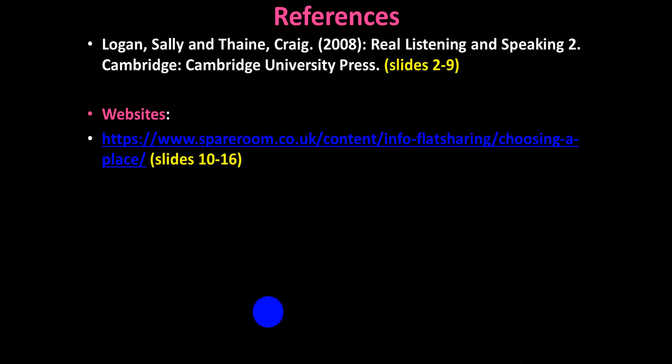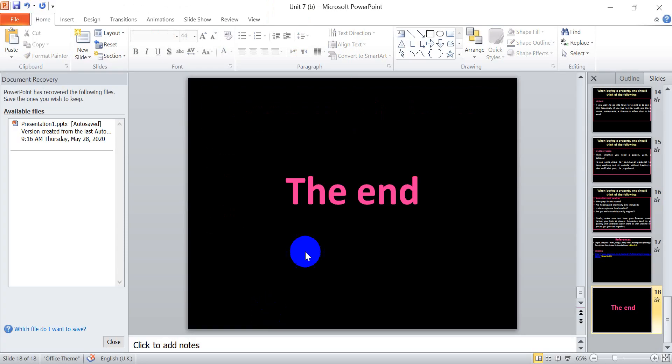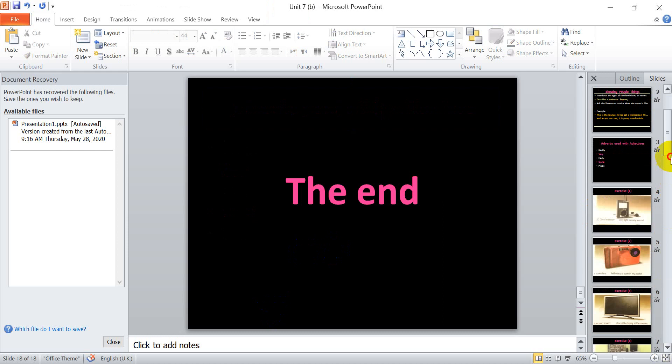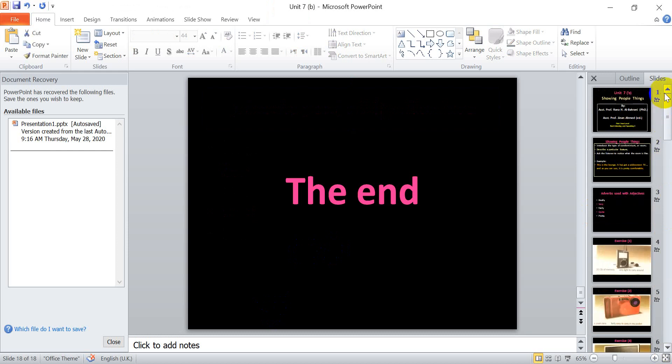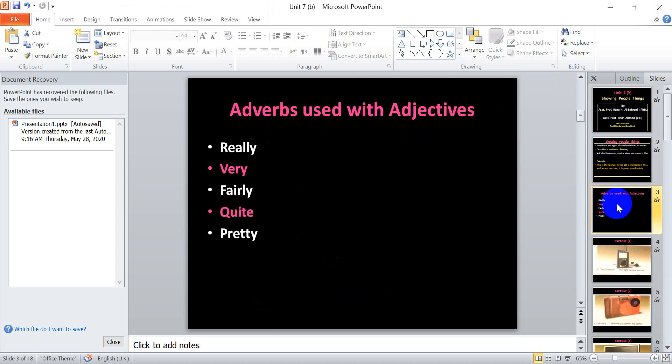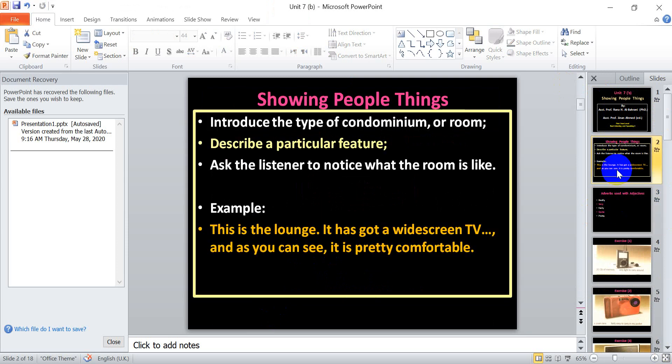So this is the end of the slide. In this unit, you have to know how to show things to people. If you want to hire accommodation, what are the things to be taken into consideration? We have some adjectives and adverbs that are usually used with adjectives. If you want to show people things, you start with the type of condominium, describe the particular items within that condominium, and then ask about the type the buyer prefers. This is all about this unit. Thank you very much for watching and listening.